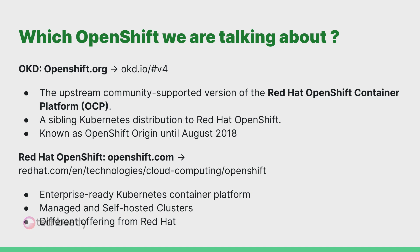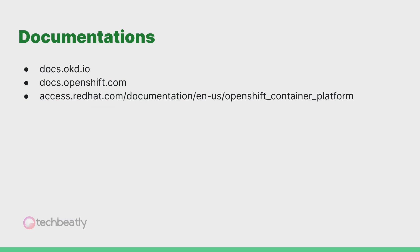We have different versions of OpenShift. The first one is the OpenShift community version called OKD, also known as OpenShift Origin until August 2018. This is the upstream Kubernetes community-supported version of the Red Hat OpenShift Container Platform, or OCP — a sibling Kubernetes distribution to Red Hat OpenShift. The second one is Red Hat OpenShift, which is the enterprise Kubernetes container platform with enterprise support and functionalities, offering both managed and self-hosted options.